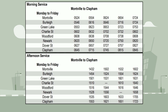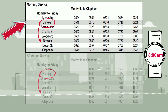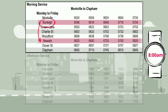Let's have a go together. Let's say I need to get from Burley to Newark and I want to get there at about eight o'clock in the morning. I'll use this section because it's the morning services. Here are the times trains leave Burley, and here are the times the trains arrive in Newark. This one looks good — it arrives at 7.50 a.m. I know I need to be at the Burley station by 7.16 a.m.